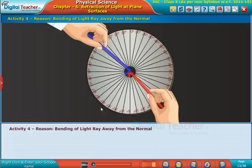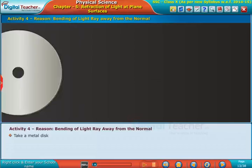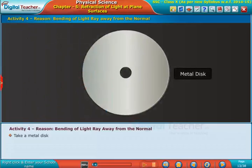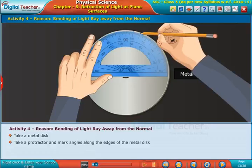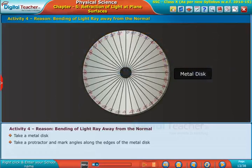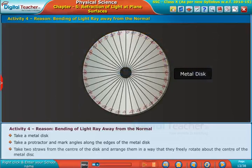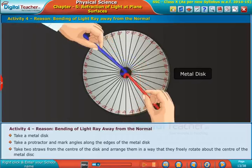Welcome to the lab activity for reason bending of light ray away from the normal. Take a metal disc. Take a protractor and mark angles along the edges of the metal disc. Take two straws from the center of the disc.